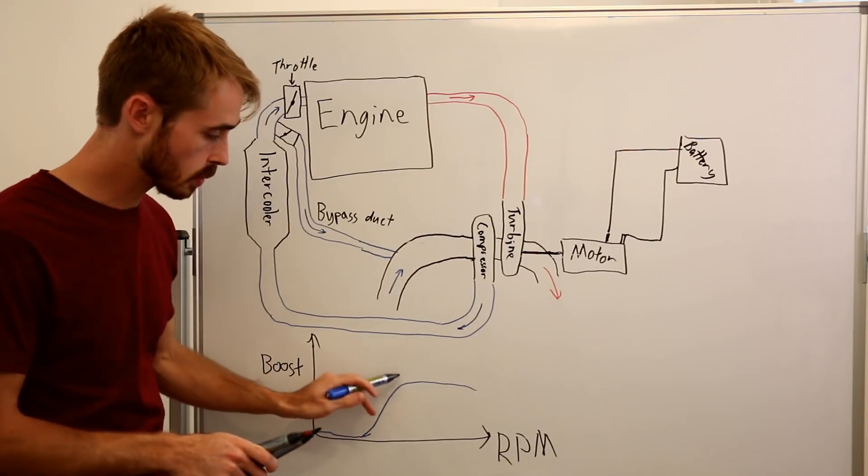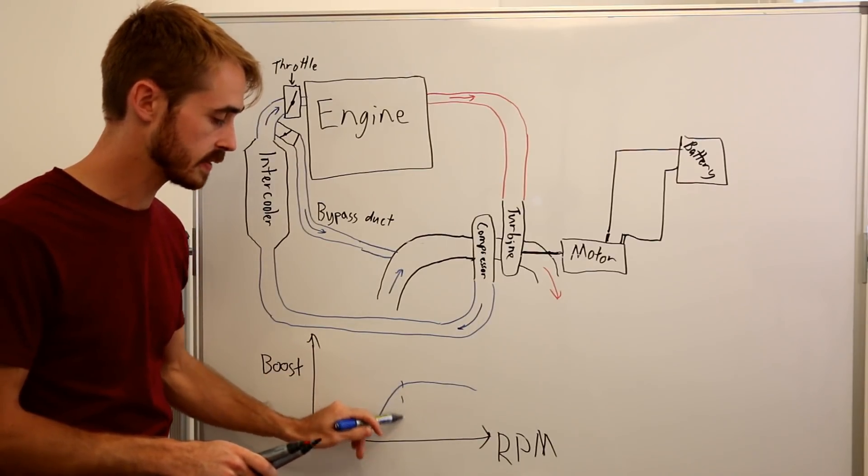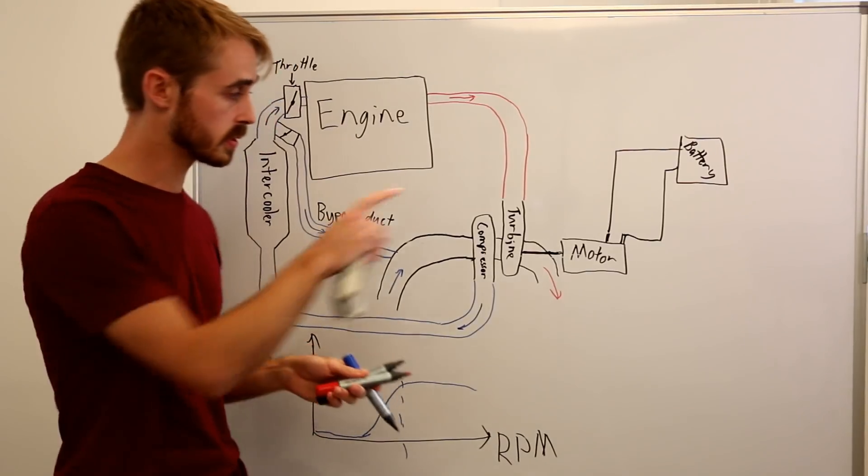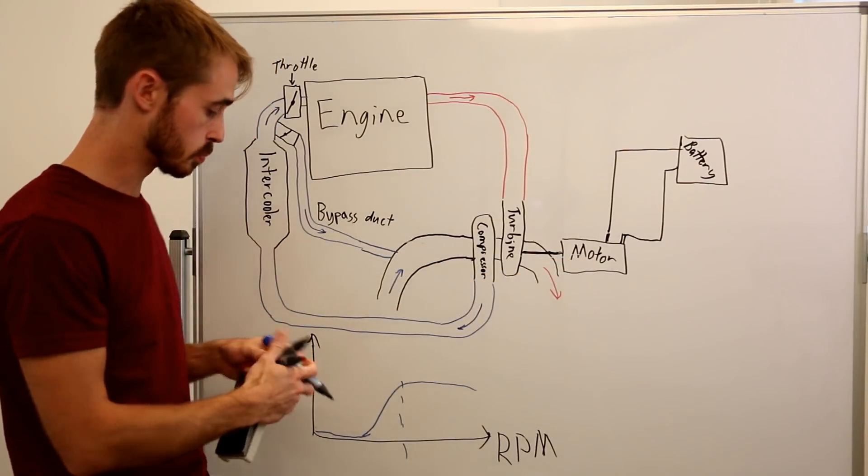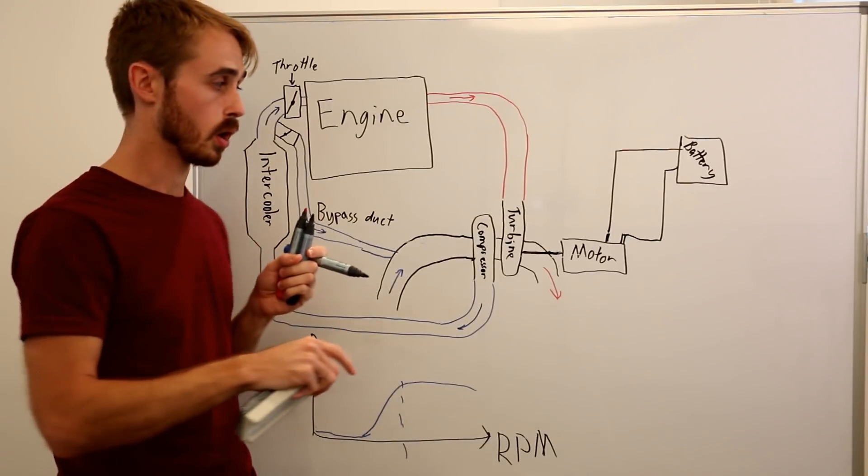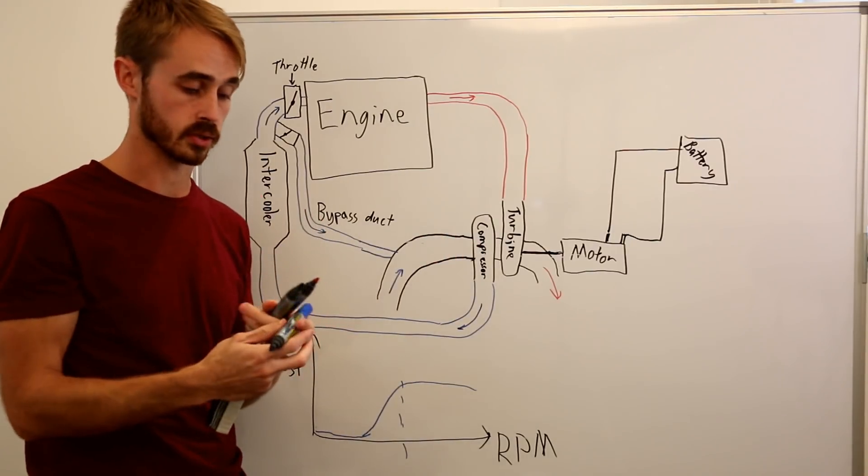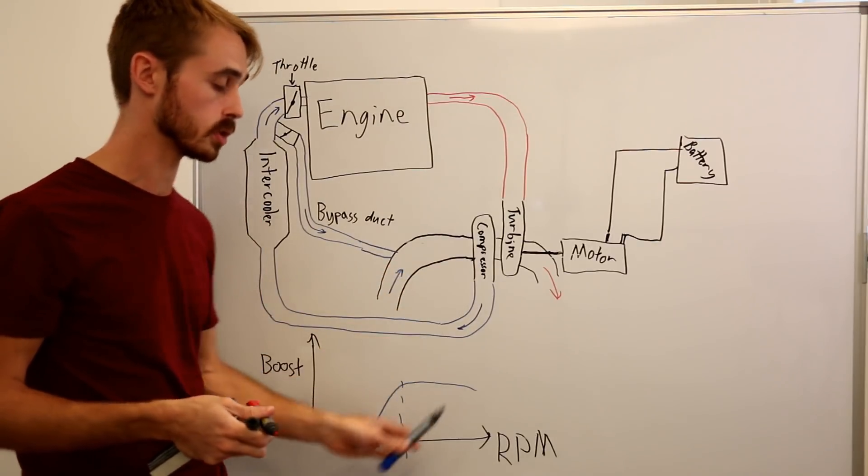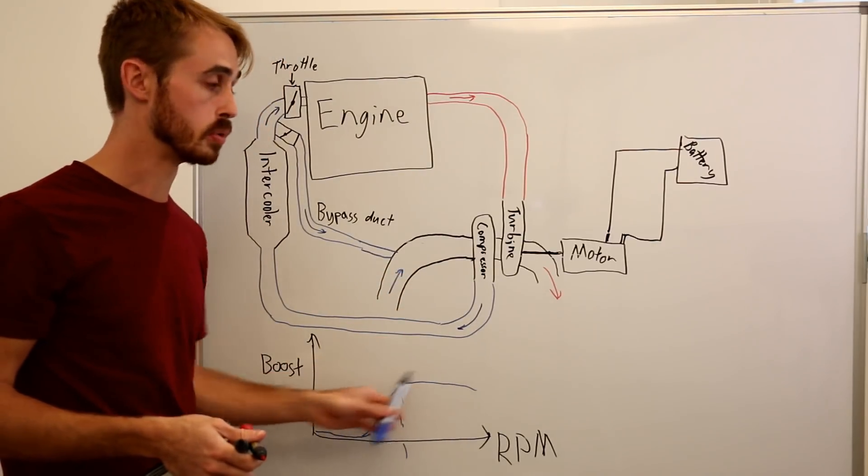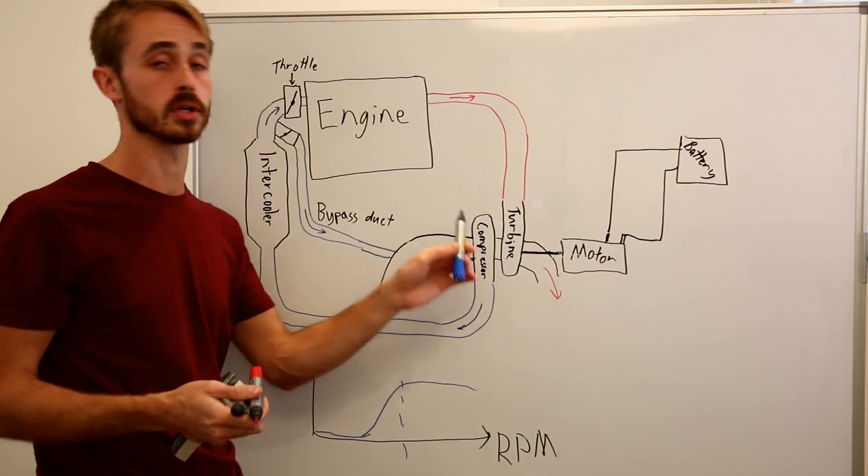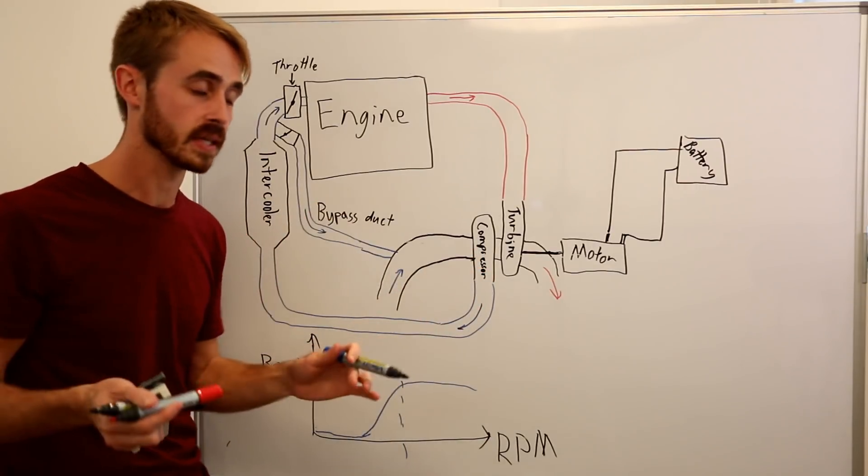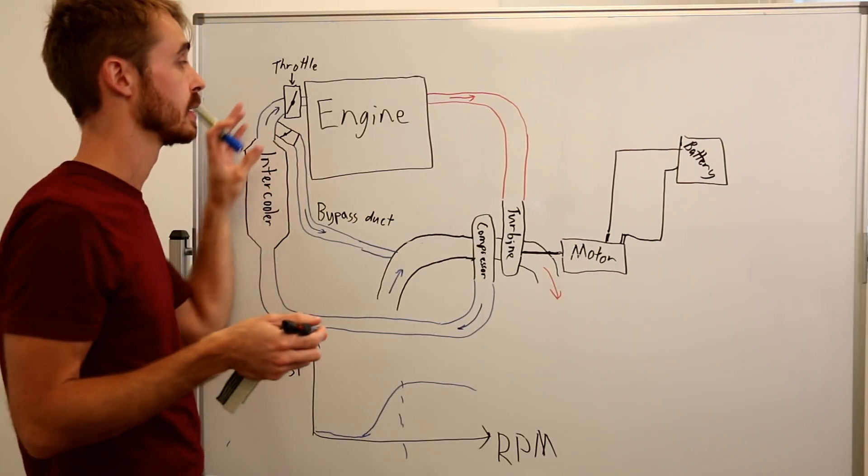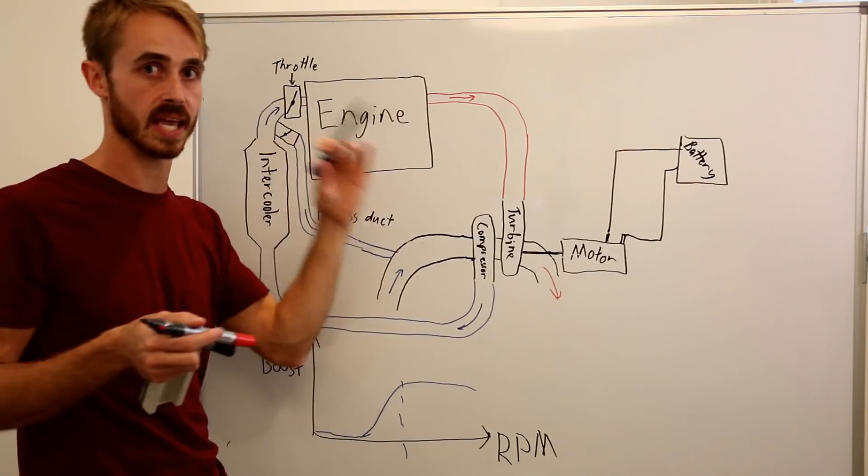So anyway, we go along at a certain RPM, and we'd say at this RPM we're hitting our peak boost under our standard setup. Now what we can do with this electric motor - this boost is largely a function of how hard the compressor is spooling. So you can roughly correlate, assuming you're still in a reasonable range of the compressor operation, you can roughly correlate the boost pressure to the turbocharger RPM. I say roughly because obviously depending on what the engine is flowing, you may need more RPM to get a higher boost pressure or the same boost pressure.